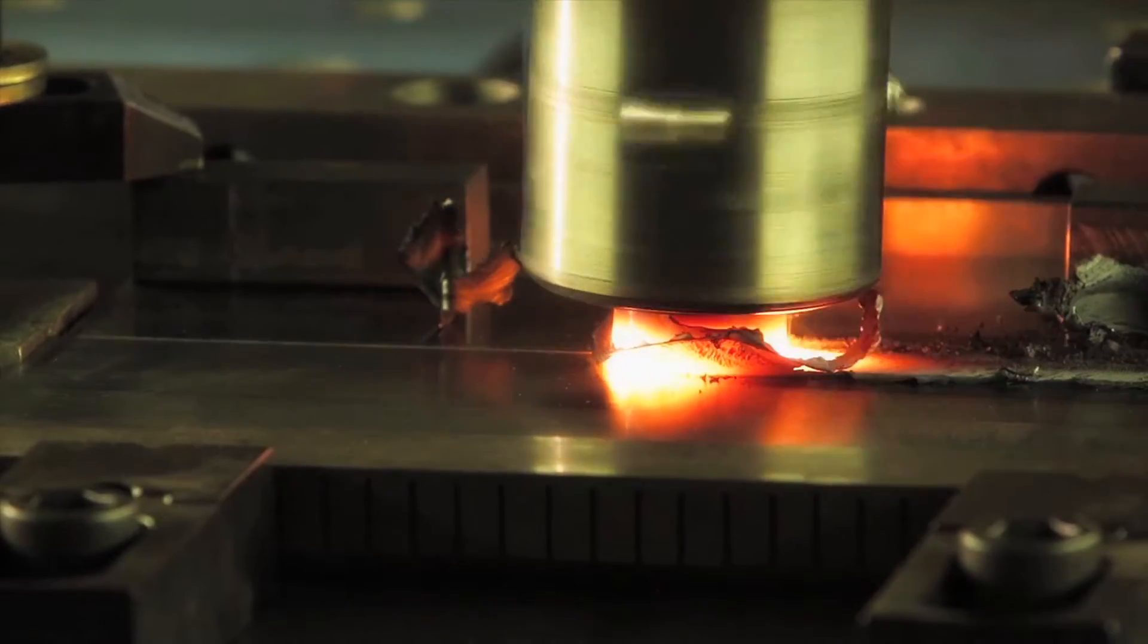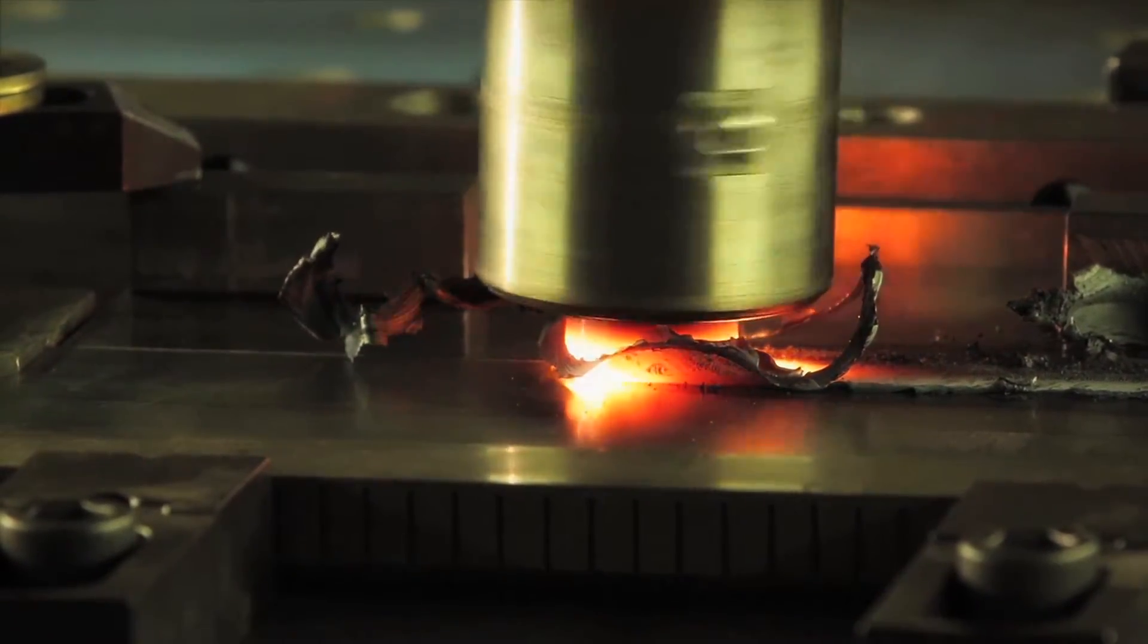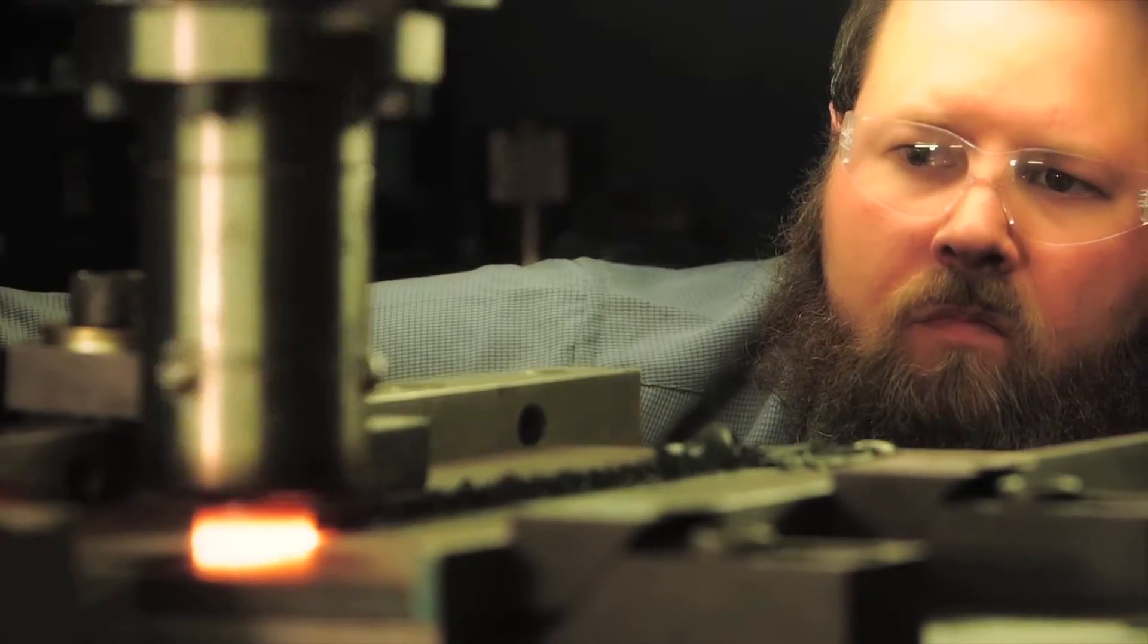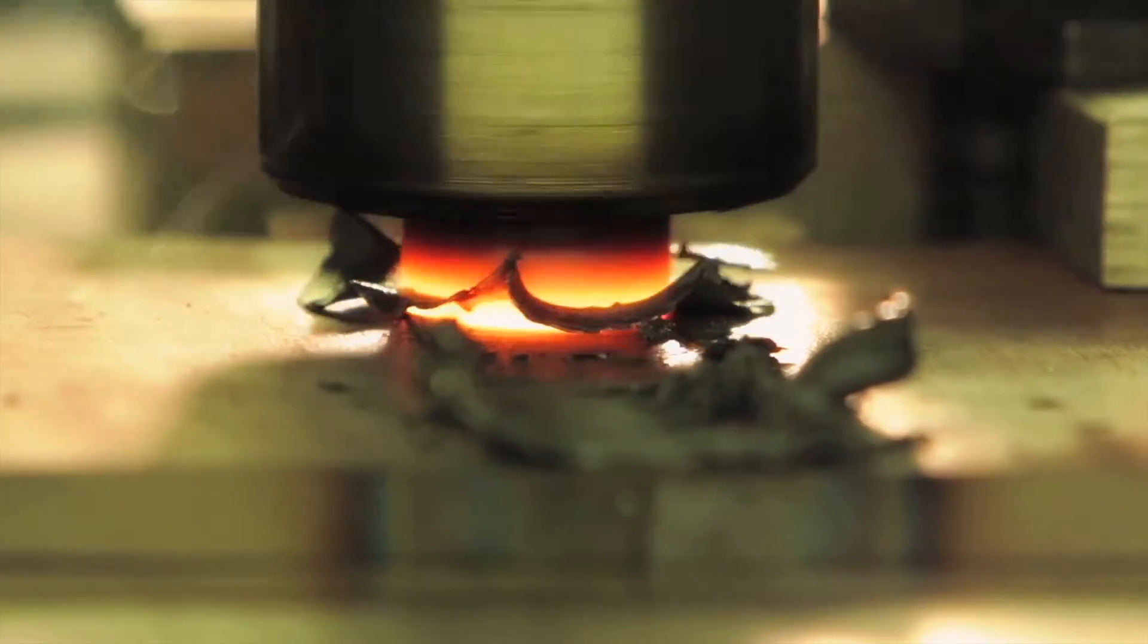As a result, this process can be used to join materials with special microstructures, including so-called unweldable aluminum alloys.